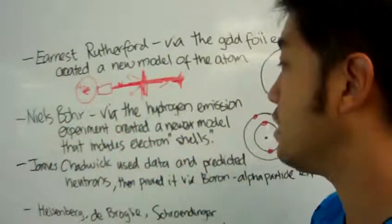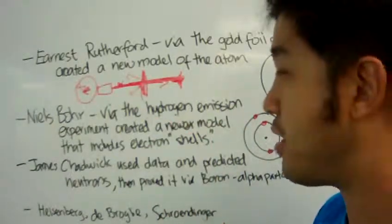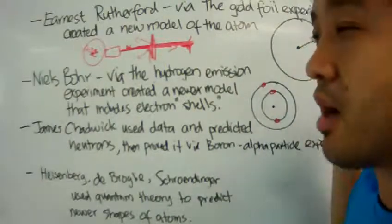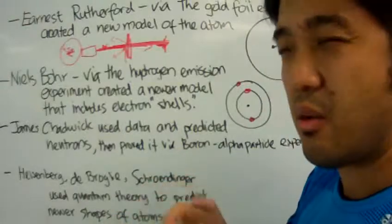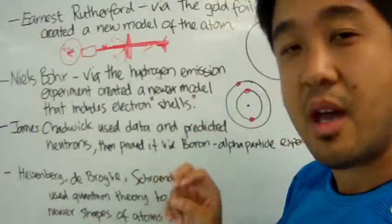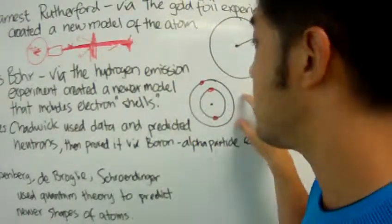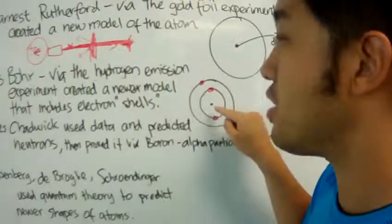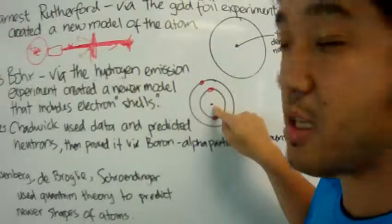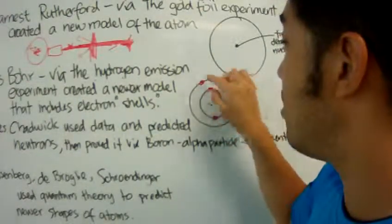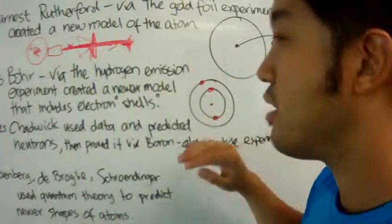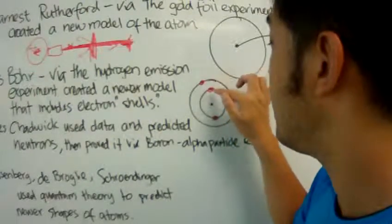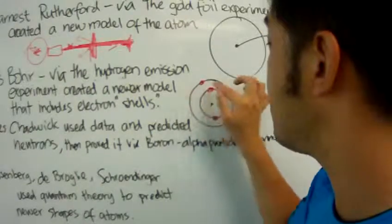Then Niels Bohr came along, and by his hydrogen emission experiment, he created a new model of the atom. It kind of built upon Ernest Rutherford's model, but added electrons and what the electrons were doing in shells. The electrons around the nucleus live in layers of energy called shells, and the electrons are moving in an orbit around the nucleus.